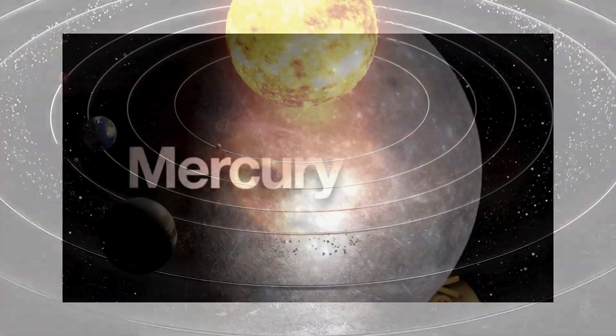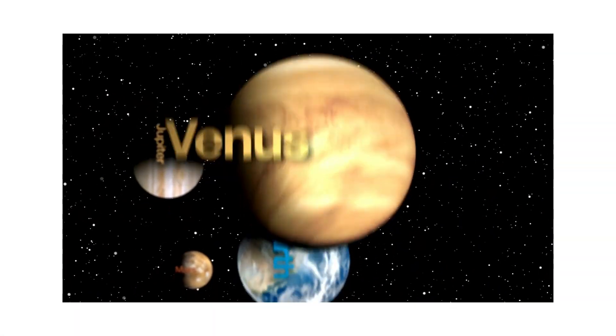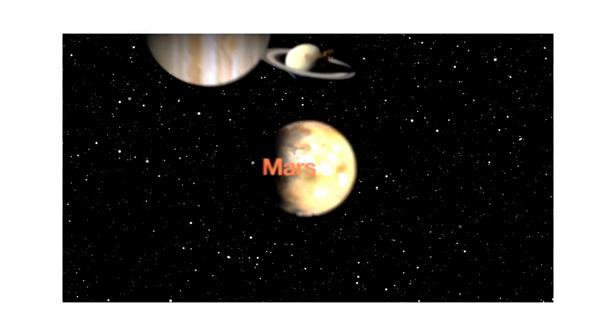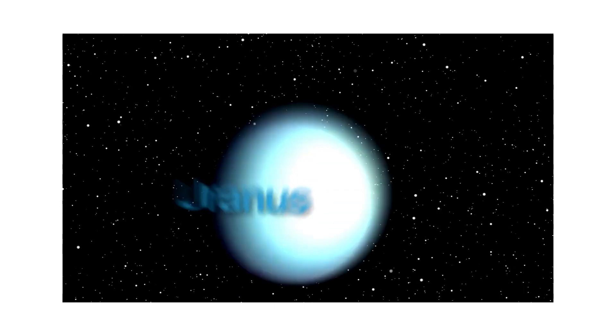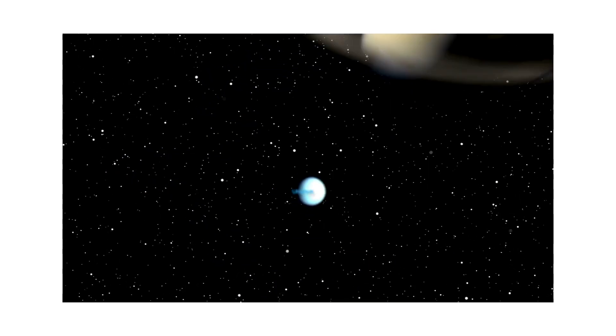Here we go: Mercury, Venus, Earth and Mars on show. Jupiter, Saturn, Uranus and Neptune. The solar system shining like the moon.